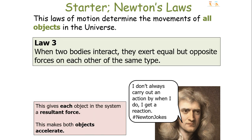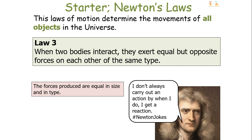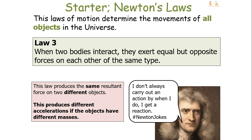The third law is probably one of the most misquoted laws in all of physics. Newton's Third Law of Motion states that when two bodies interact, they exert equal but opposite forces on each other of the same type. This gives each object in the system a resulting force, making both bodies accelerate. For this law to work there must be two objects in the system — for example, a person and the ground. The forces produced are equal in size and type, but act on different objects and in opposite directions, and can produce different accelerations if the objects have different inertial masses.